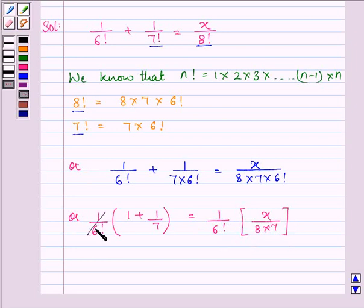Canceling out 1 by 6 factorial from both sides, we have 1 plus 1 by 7 is equal to x divided by 8 multiplied by 7.